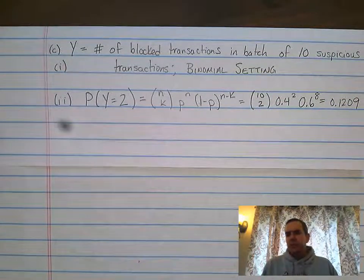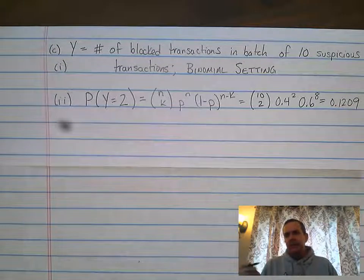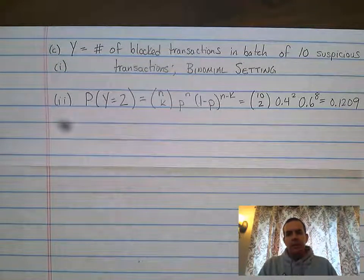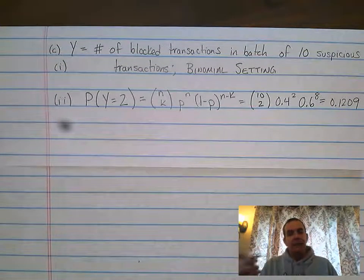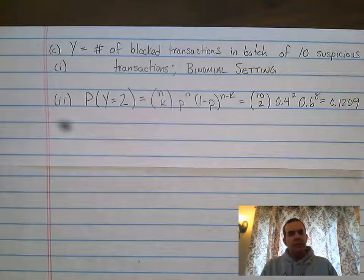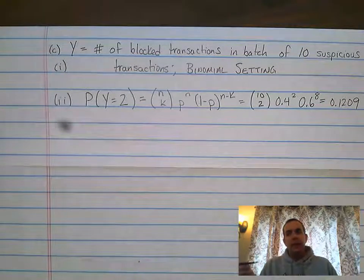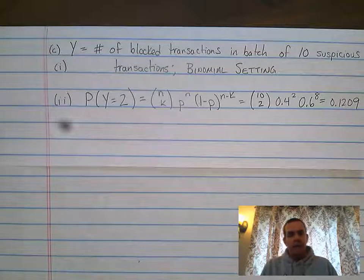Part C of this bounces back to the binomial setting again. It asks to define a variable. It's saying if you had a set of 10 suspicious transactions, what is the probability of finding exactly two that were blocked?